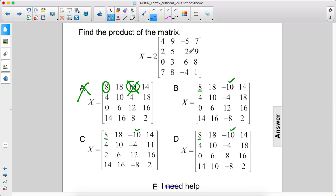2 times negative 2 is negative 4. We've already eliminated this one. So negative 4, negative 4, negative 4. Yes.